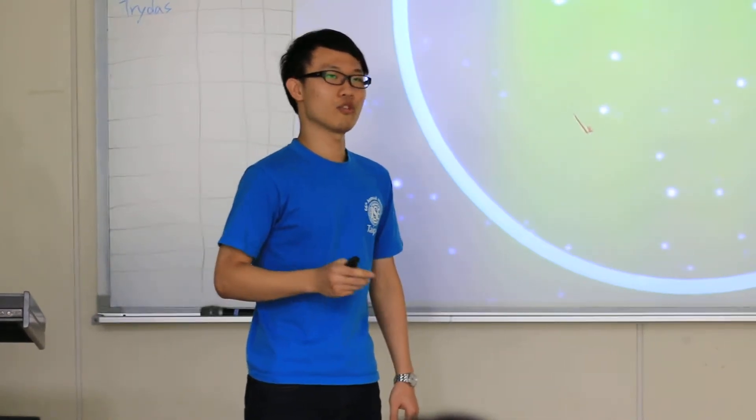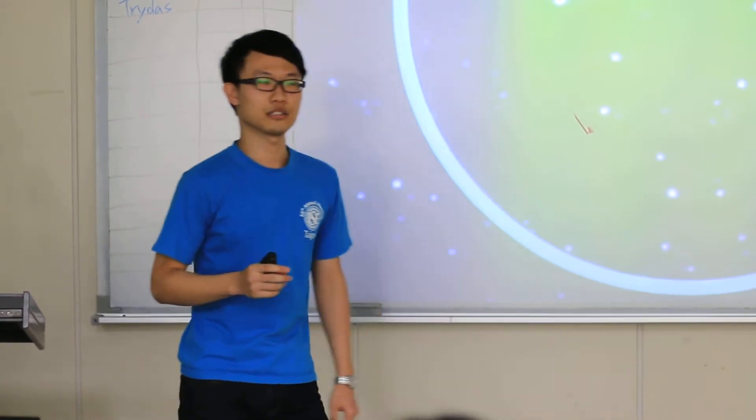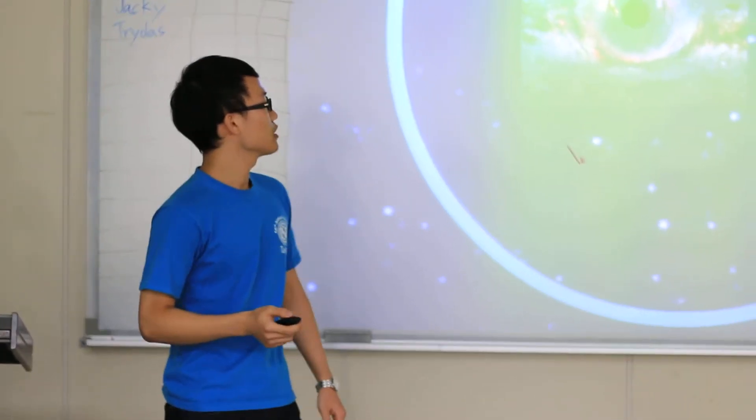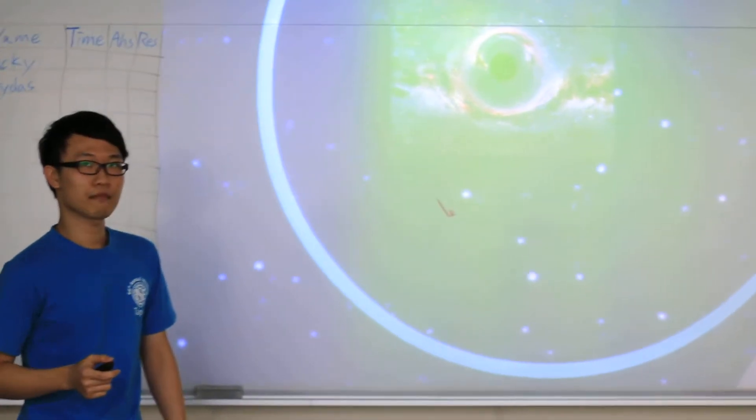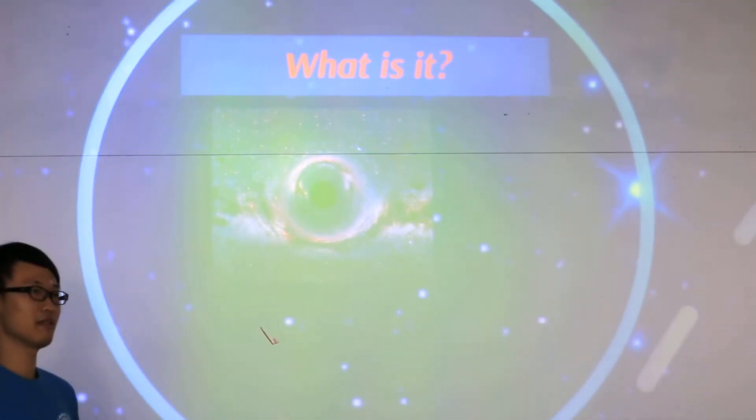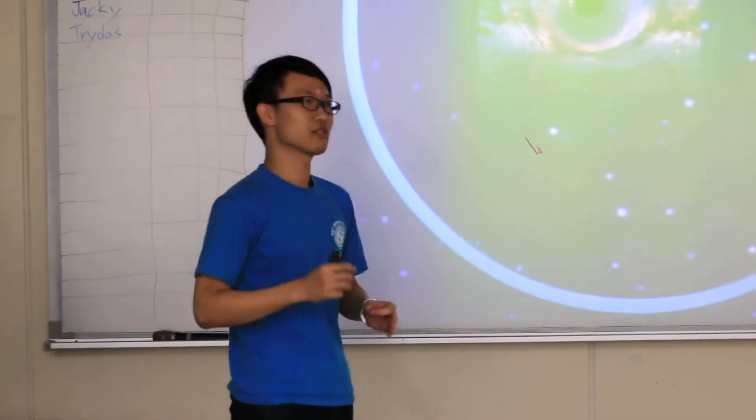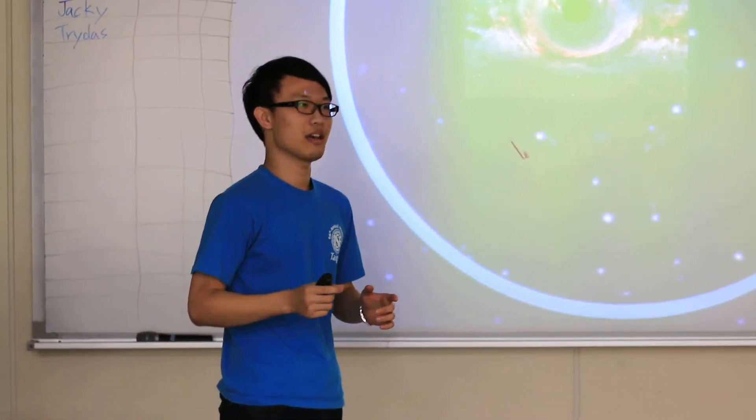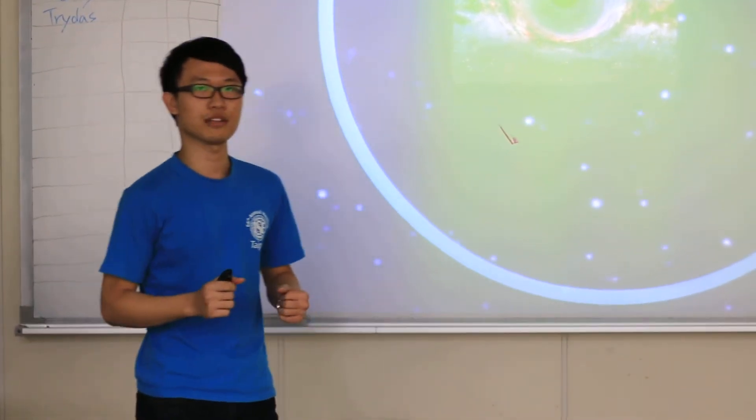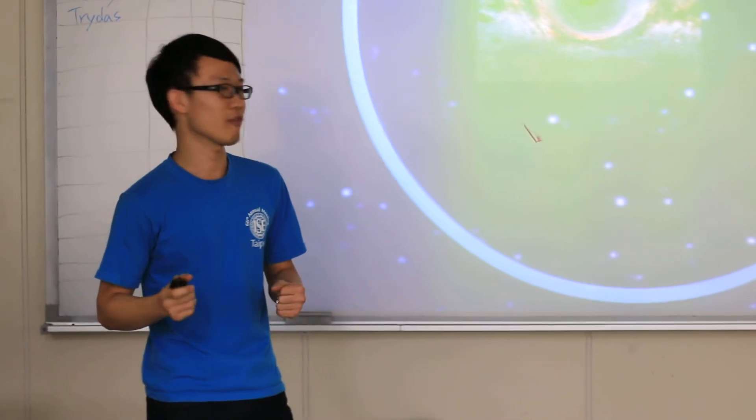I think some of you may have come up with some ideas. Is it a supermassive black hole? A supermassive black hole is so massive that it can twist space and even slow down time. Even light cannot escape from it.